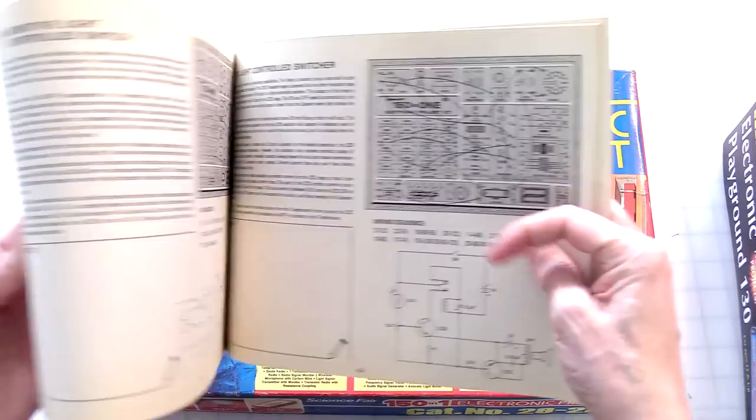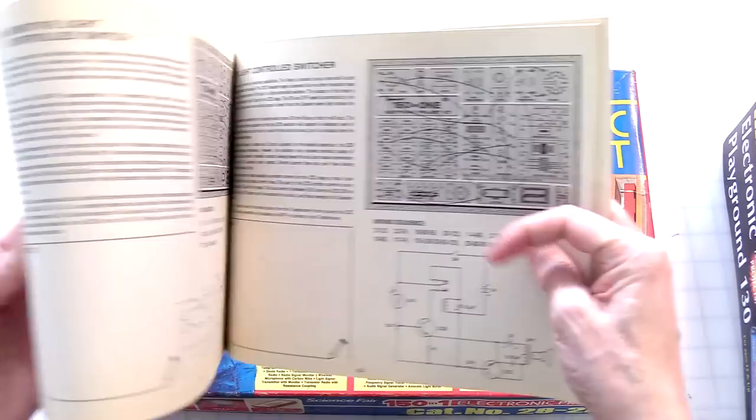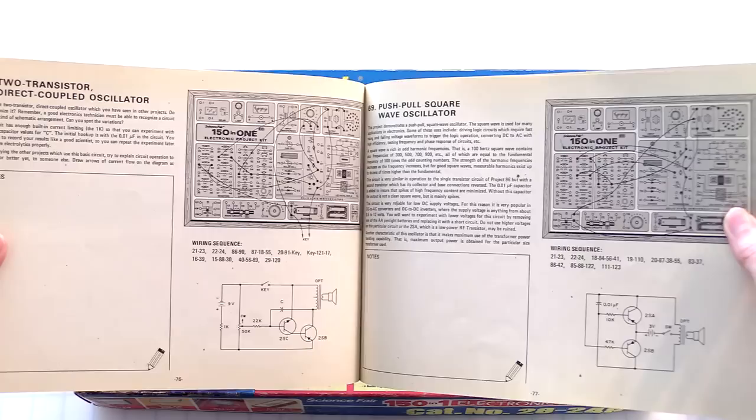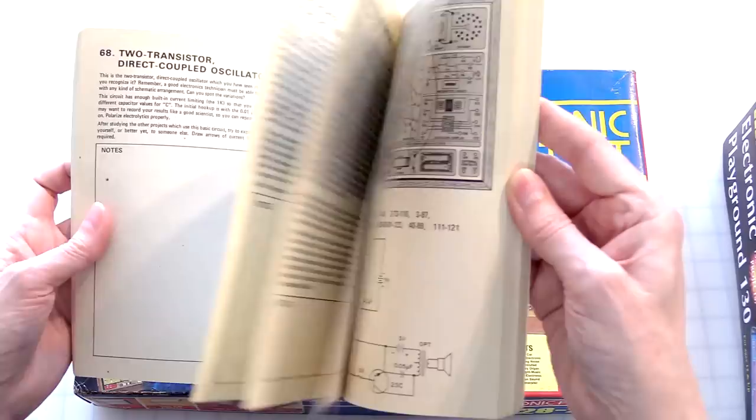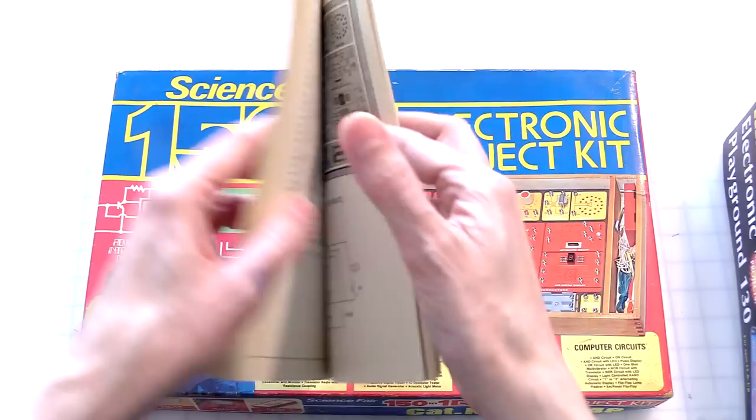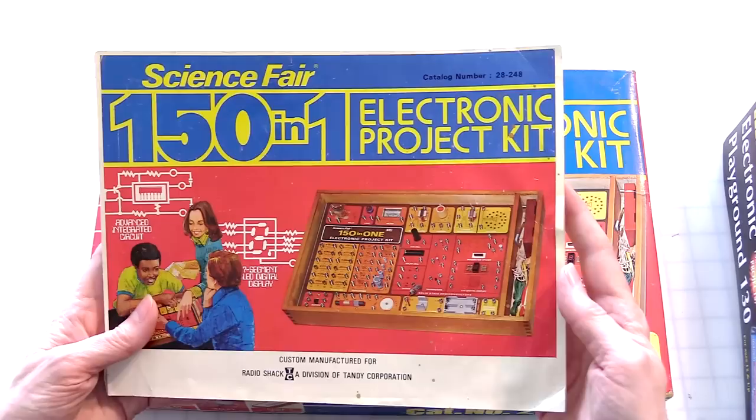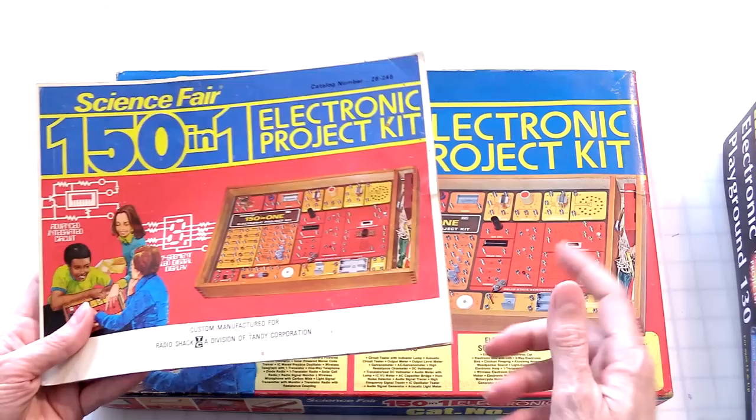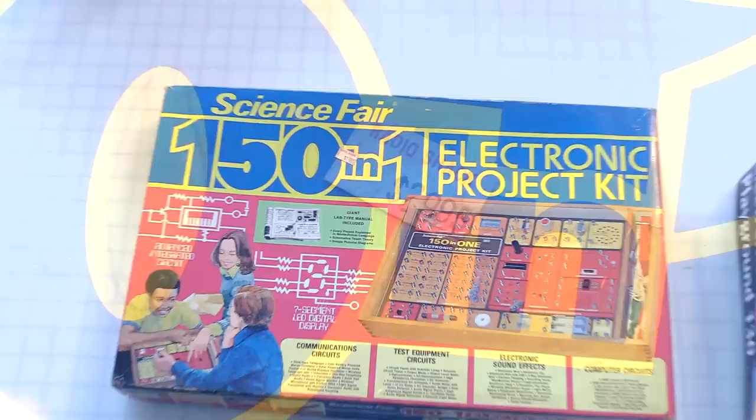It had a relay so you could have light-controlled relays and switch stuff that was outside of the kit. Push-pull, square wave, also you could actually do pretty cool advanced stuff with the 150-in-1 kit. And that's why this is such a powerful learning tool and just so much fun and so many hours that I spent putting together projects with the 150-in-1. And one of the things about this particular one that I got off eBay, it still has the original price tag on it: $29.95, about $30. So the Radio Shack sticker, it's official.